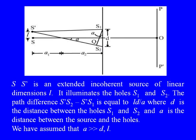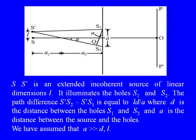In this figure, SS' is an extended incoherent source of linear dimensions L. Extended incoherent source means the various points of this extended source have no phase relationship among themselves — each is an independent point source. This extended source SS' illuminates the holes S1 and S2, which form a pair of coherent sources. Let us consider the path difference S'S2 and S'S1. The point S is situated symmetrically, but S' is not symmetrically situated with respect to S1 and S2.